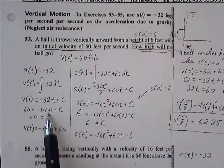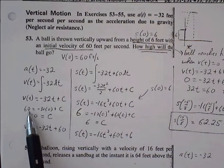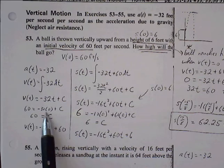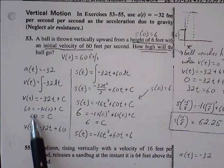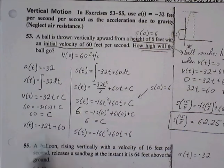60 plugs in for velocity. So 60 equals negative 32 times 0 plus C. This makes it 0, so C is equal to 60. So velocity is equal to negative 32t plus 60. This is our specific equation.